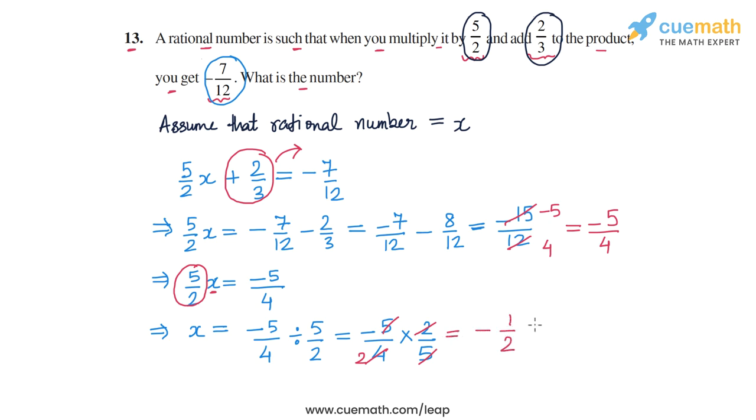So finally what we get is x, the value of x is equal to -1/2 which is the value of the rational number we wanted to find. So the answer to this question is that the required rational number is -1/2 and that completes question number 13.